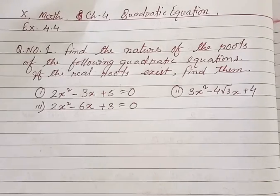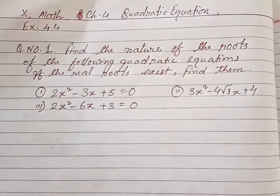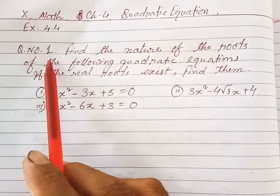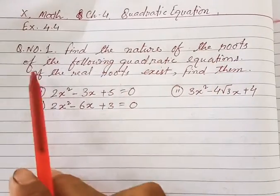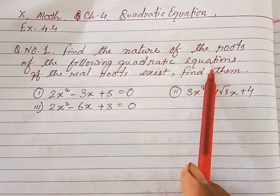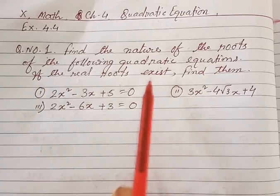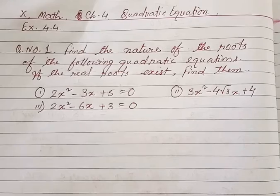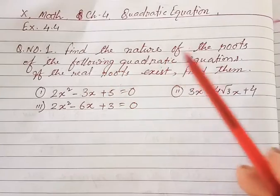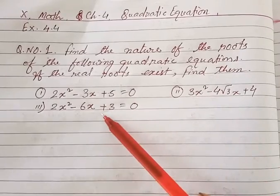This is from the chapter Quadratic Equations, Exercise 4.4, Question Number 1. Find the nature of the roots of the following quadratic equations. If the real roots exist, find them. So you are asked to find the nature of the roots — three quadratic equations are given.